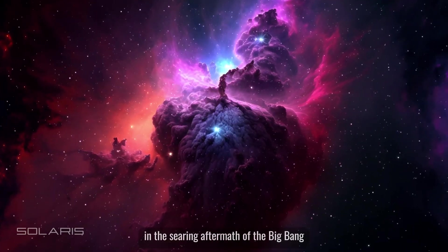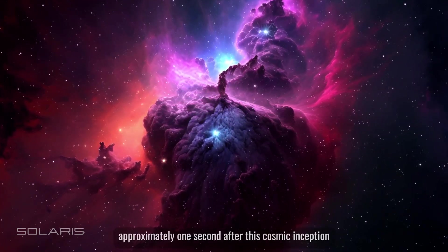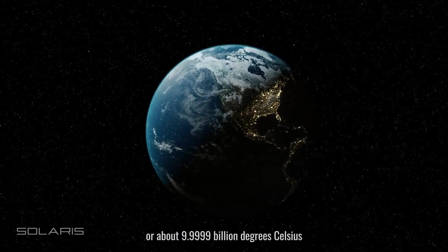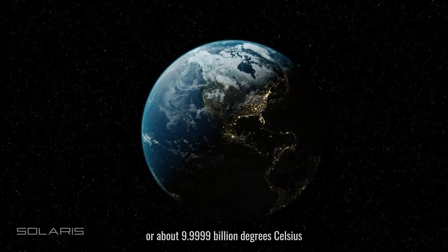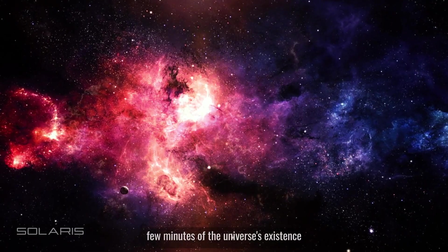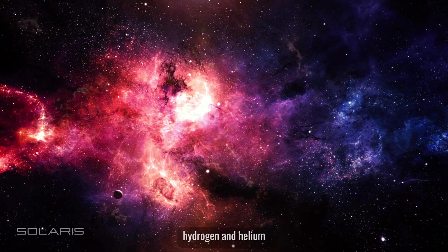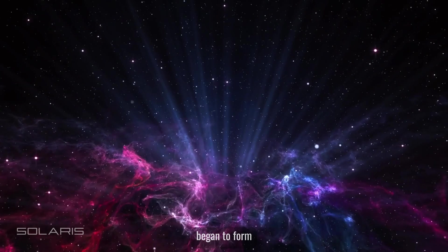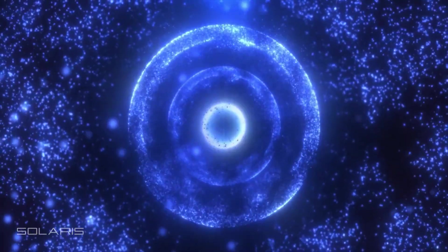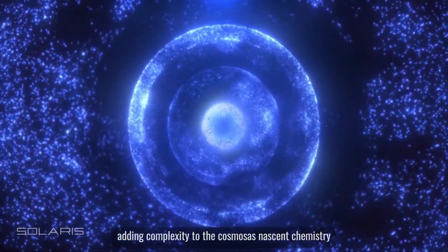In the searing aftermath of the Big Bang, the universe was a crucible of extreme heat and density. Approximately one second after this cosmic inception, the universe's temperature soared to around 10 billion kelvins. Within the first few minutes, conditions were ripe for the birth of the simplest elements. Hydrogen and helium, the most abundant elements in the universe, began to form. A dash of lithium joined this primordial mixture, adding complexity to the cosmos's nascent chemistry.